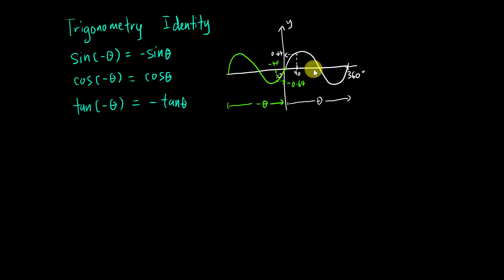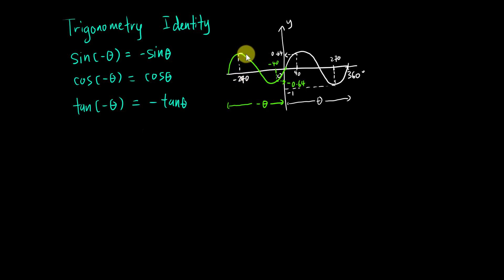No matter which value you take — for example, if I take 270, I get negative one. And then if I take negative 270, I will get positive one. So basically they get the same magnitude but one is positive and the other is negative. The same thing happens to tangent, and that is their relationship.